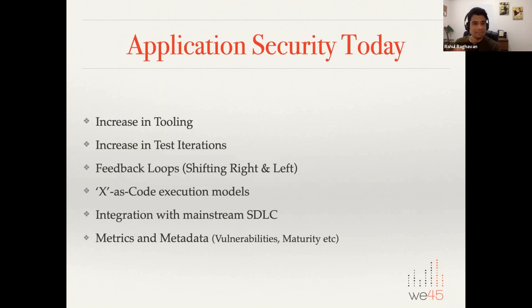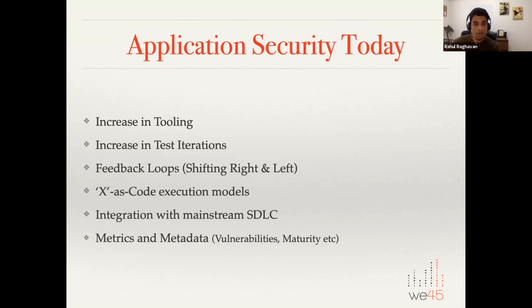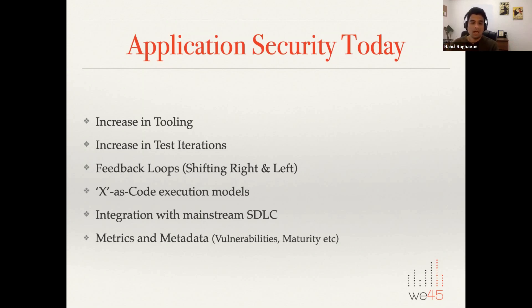Looking at the state of application security today, we're seeing a large increase in tool adoption — SAST, DAST, SCA, and so on — leading to higher test iterations. Thanks to the DevSecOps model, we're seeing feedback loops not just from shifting left but also shifting right with automation and security monitoring. We're also seeing an 'as-code' execution model: it started with security as code, then infrastructure as code, and today we're talking about threat modeling as code, which is a catalyst in the AppSec automation and DevSecOps space.